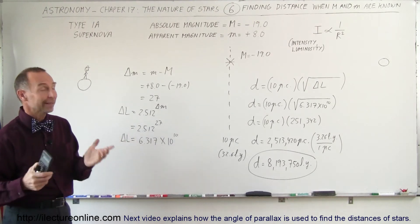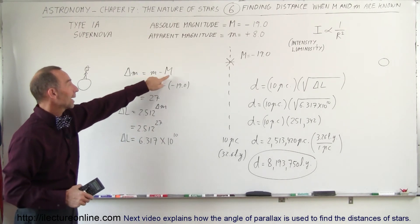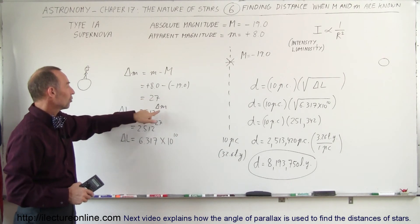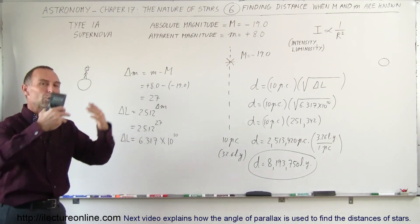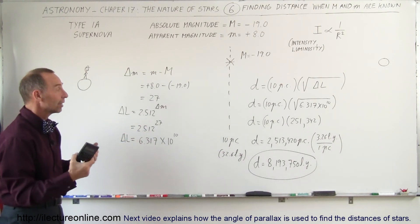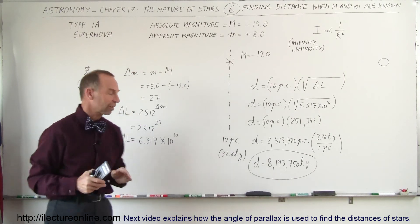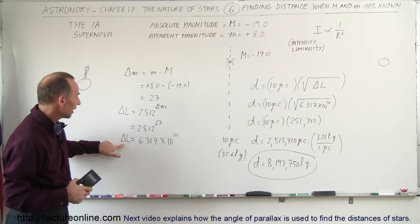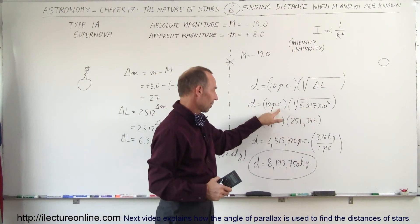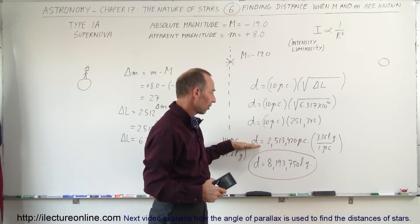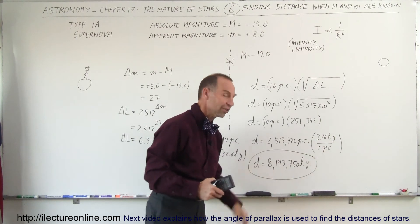Again, take the difference in the magnitudes between the apparent and the absolute magnitude. When you have the difference, you use it as an exponent to find the difference in the luminosity at the location where it actually is (the apparent luminosity) and the luminosity where it would be (the absolute luminosity) if we placed it 10 parsecs away. We get that difference in the luminosity, we take the square root of that number, multiply it times 10 parsecs. That gives us the distance in parsecs.